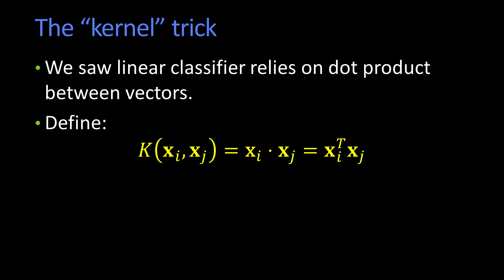We saw that the linear classifier only depends on dot products. Remember that? I circled it, I jumped up and down a minute. So let's define some function k of two points, xi and xj, as just being the dot product between them.